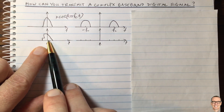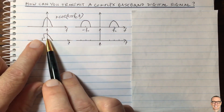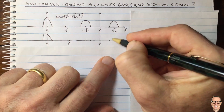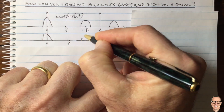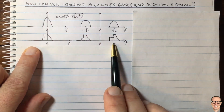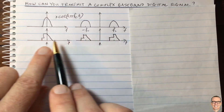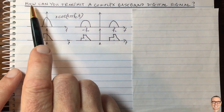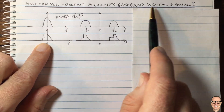What would happen to this signal if we could multiply it by cosine? We would get this convolved with the delta functions in the frequency domain from the cosine — one of them at the carrier frequency. We can clearly see that at the carrier, we would not have symmetry, so this is not real. Even if it were real and you tried to multiply by cosine, it's not real at the carrier. So the question remains: how can you transmit a complex baseband digital signal?